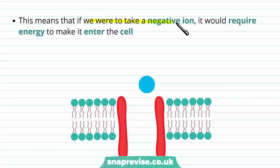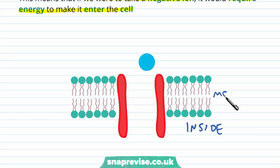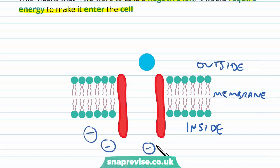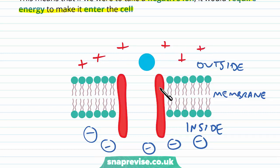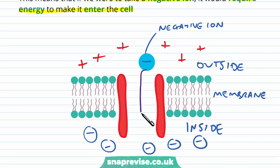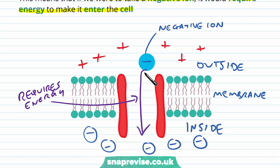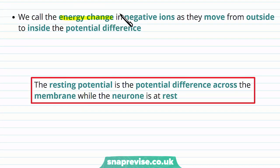If we take a negative ion, it would require energy to enter the cell. Let's illustrate this: the inside of the cell is on one side of the membrane and the outside on the other. The resting potential is negative, so inside is mostly negative compared to the outside, which is relatively positive. A negative ion will repel other negative things and be attracted to positive things, so getting it into the cell requires energy — it's going against what it wants to do, similar to active transport. The energy change when negative ions move from outside to inside is called the potential difference.